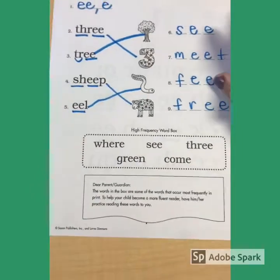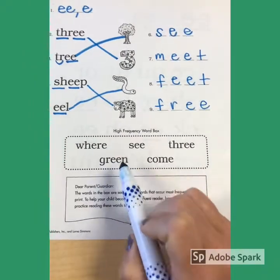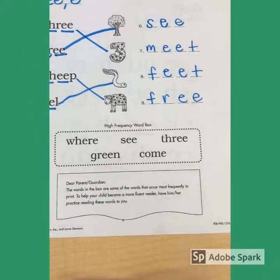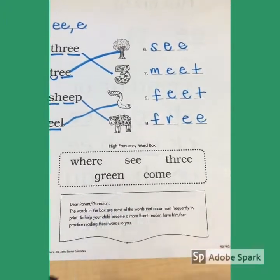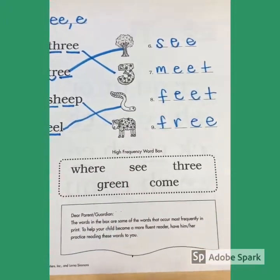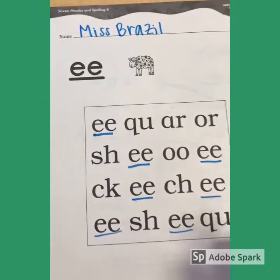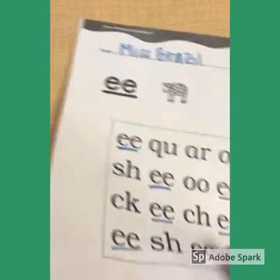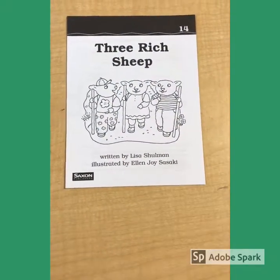Last thing on the worksheet — we're going to look at the high frequency word box and try to read those words. You can take them to mom or dad, brother or sister. Make sure your name is on the front of the paper, then put it aside. Now grab out the book Three Rich Sheep, because we're going to read that together next.